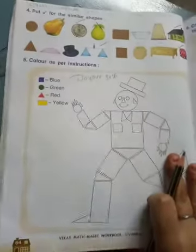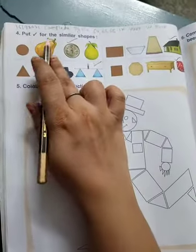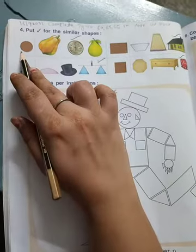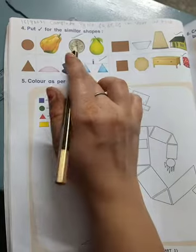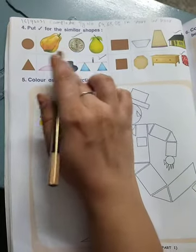Page number 64. Put right for the similar shape. Here we have to match the object.